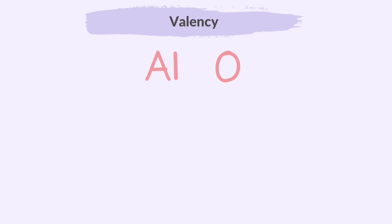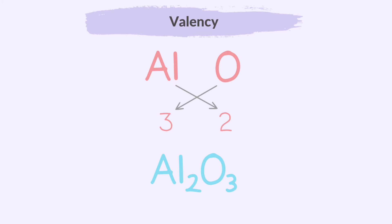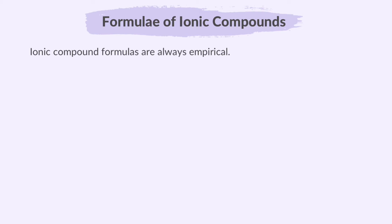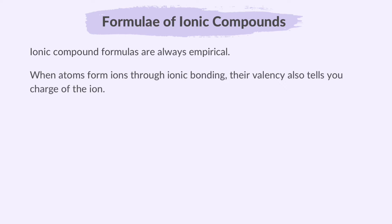Let's work out the formula for aluminium oxide. Aluminium, Al, has a valency of 3, and oxygen, O, has a valency of 2. Criss-cross each atom's valency with the valency of the combining atom to determine the formula of a compound. In this case, the formula will be Al2O3. If valencies are equal, you must cancel them out. Ionic compound formulas are always empirical. When atoms form ions through ionic bonding, their valency also tells you the charge of the ion. For example, sodium ion has a +1 charge and chloride ion has a −1 charge.